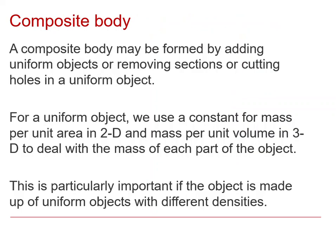Now what are the principles we're using here? A composite body may be formed by adding uniform objects, we've had three of them, or removing sections or cutting holes as we shall see later. Now when we do that, we use a constant for the mass per unit area, in this case, and in three dimensions of mass per unit volume. And that procedure is particularly important if we're composing a body from elements of different densities.